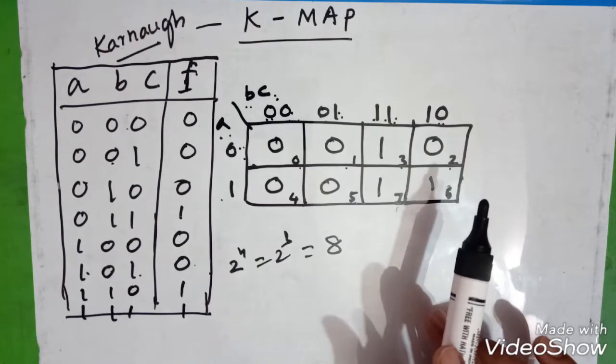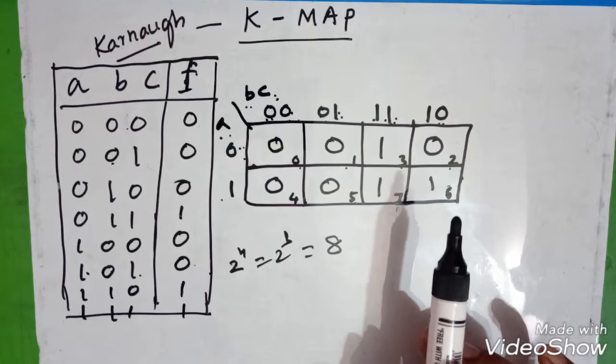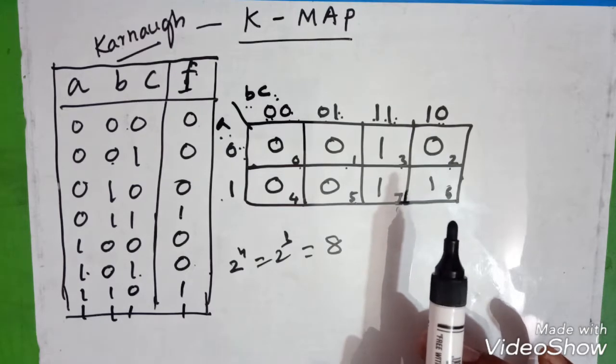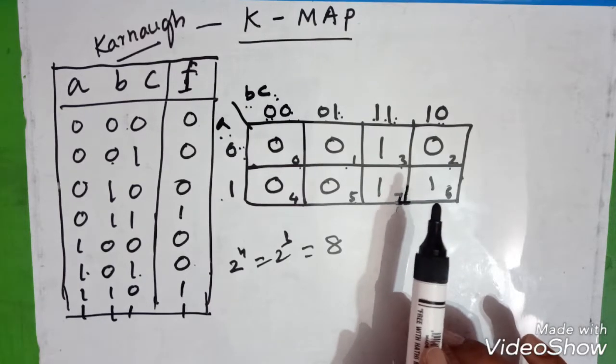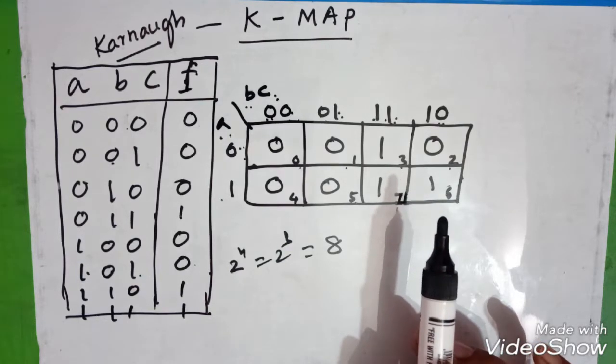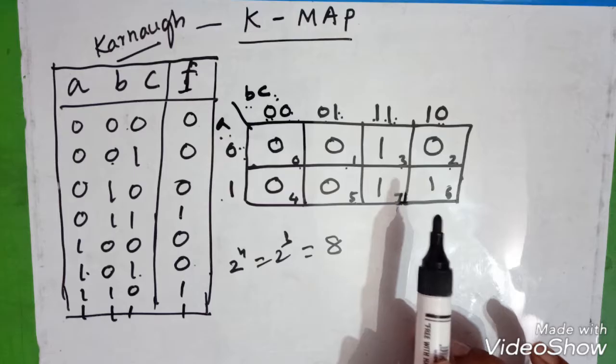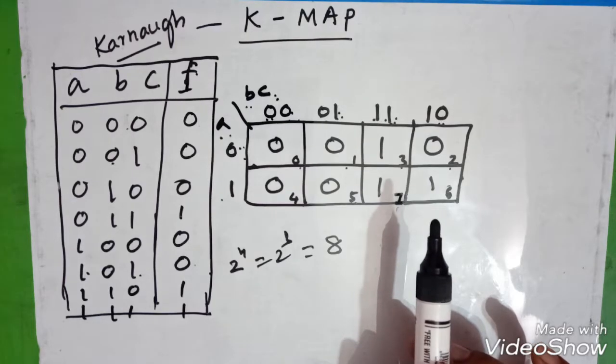Basically the K-map is used for the simplification of the boolean expressions to reduce it, so that when you are going to implement the circuit, that should be minimum circuits, minimum number of gates must be required to design. That will reduce the cost of application or implementation. That is the use of the K-map.